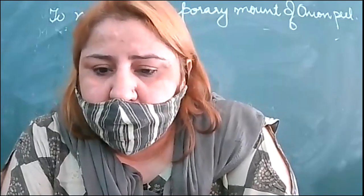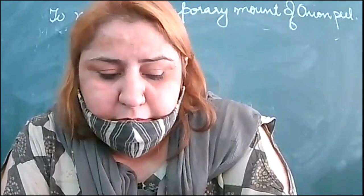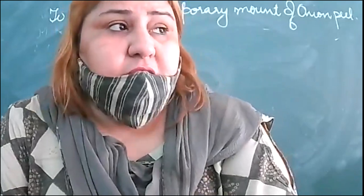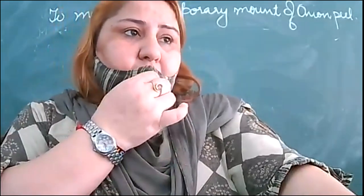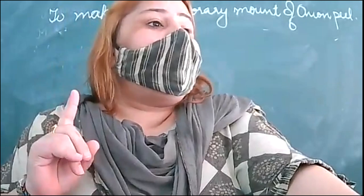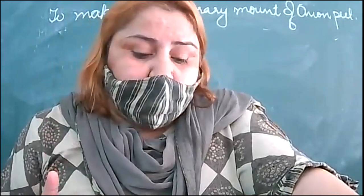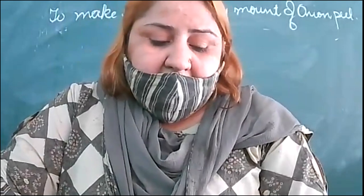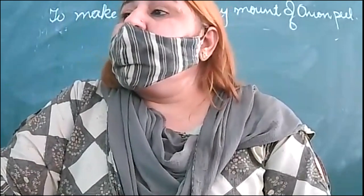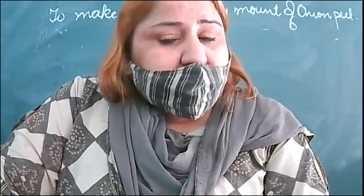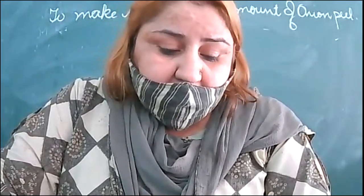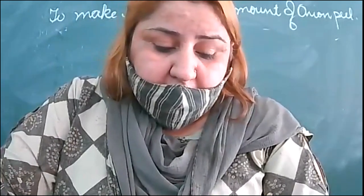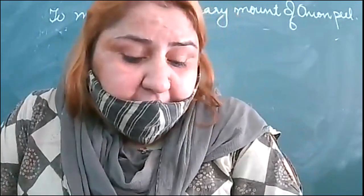Now I am going to ask MCQ questions — think and give the answer. Cell theory was proposed by: Robert Brown, Robert Hooke, or Schleiden and Schwann? Schleiden and Schwann proposed cell theory in 1838 and 1839.